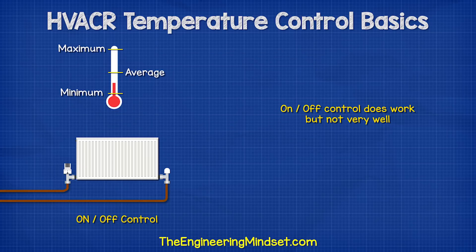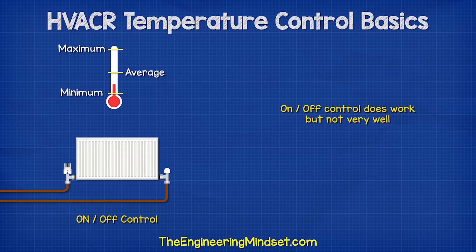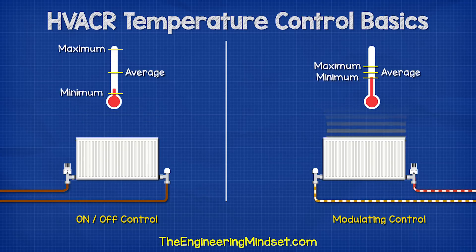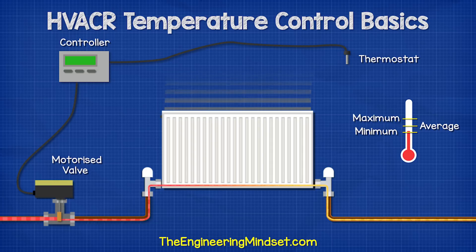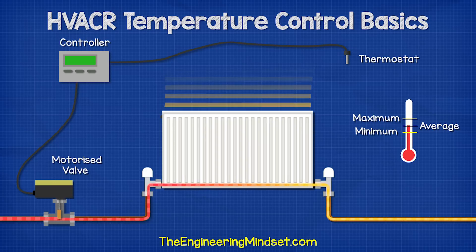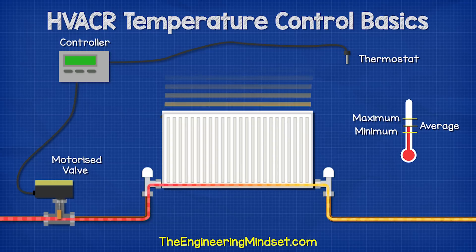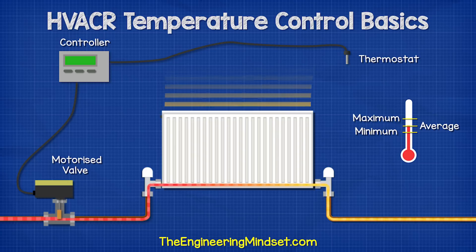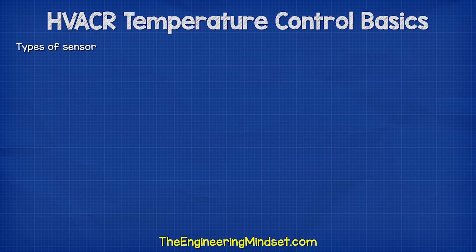Turning systems or components on and off to regulate the room temperature does work, but not very well. Instead, we can modulate the thermal output by increasing and decreasing the temperature to match the actual load. For example, in this simple heating system, we have a thermostat in the room to measure the temperature, and then a controller will compare this to the desired set point temperature and decide if the room is too hot, too cold, or just right. If it is too cold or too hot, the controller alters the position of the motorized valve to increase or decrease the amount of hot water entering the radiator.